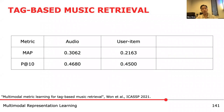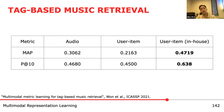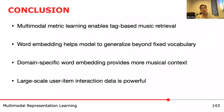We tested two approaches to represent music: audio embeddings and user-item interaction data. Audio-based approaches reported better retrieval performance in smaller settings, but when using industry-scale user-item interaction data, it outperforms audio-based approaches — meaning user-item interaction data is extremely powerful at industry scale. In conclusion for tag-based music retrieval: multimodal metric learning enables tag-based music retrieval, pre-trained word embedding helps generalize beyond fixed vocabulary, domain-specific word embedding provides more musical context, and user-item interaction data at industry scale surpasses audio-based approaches, though this could change with more audio training data.